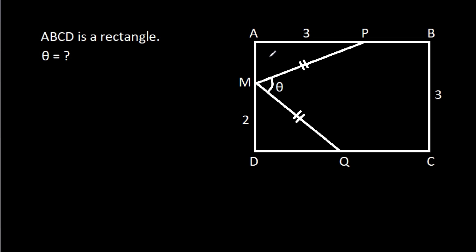In this video, we have been given that ABCD is a rectangle, AP is 3, BC is 3, MD is 2, PM is equal to QM, and angle PMQ is theta. We have to find theta.